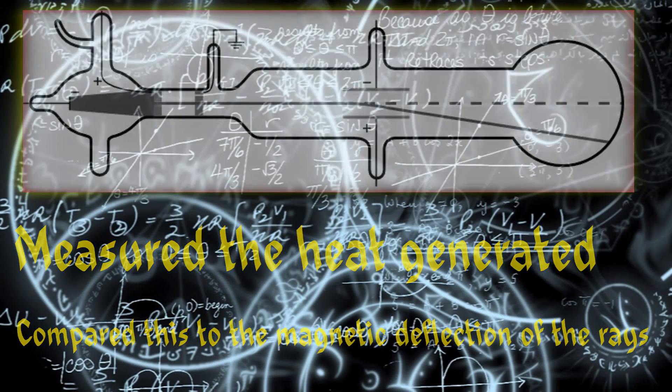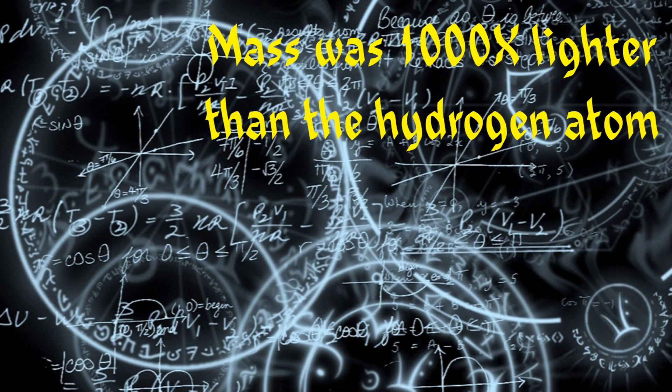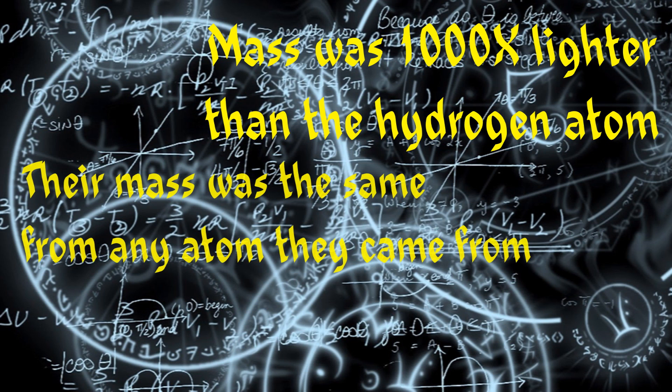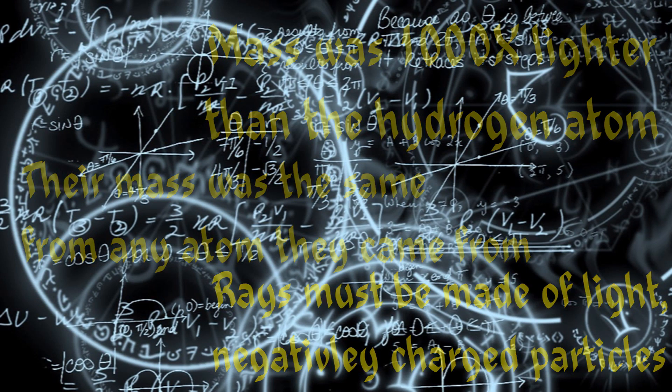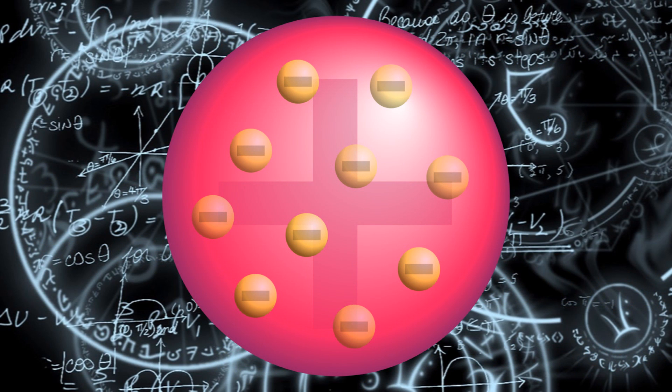His experiments suggested not only that cathode rays were over a thousand times lighter than the hydrogen atom, but also that their mass was the same in whichever type of atom they came from. He concluded that the rays were composed of very light, negatively charged particles, which were a universal building block of atoms. And this led to his plum pudding model.